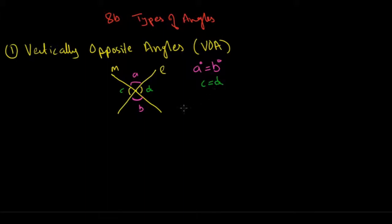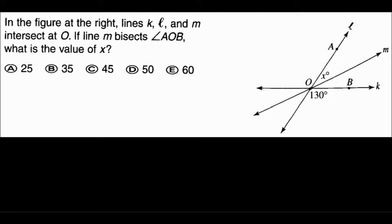So these are known as your vertically opposite angles. Very simple. Let's look at an example problem where we can apply the concept of vertically opposite angles. In the figure at the right, lines K, L, and M intersect at point O.